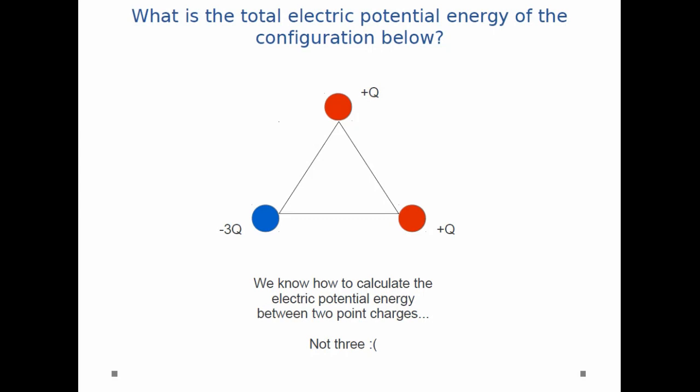Now, if there were just two point charges here, we know how to calculate the electric potential energy. It's just K Q1 Q2 divided by the distance between them. However, we've got three point charges, so we need to use superposition somehow and add them up, and it might get a little bit tricky.